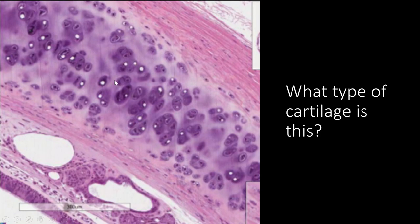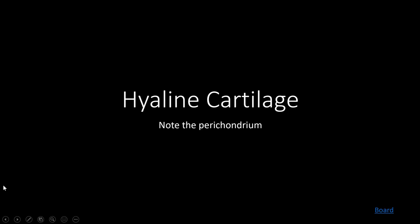Note the perichondrium — all this connective tissue surrounding the cartilage. Perichondrium means 'around the cartilage.' In this trachea image, you can see veins, blood vessels, and the perichondrium surrounding the hyaline cartilage. The respiratory epithelium is actually lining the inside of the trachea right there.